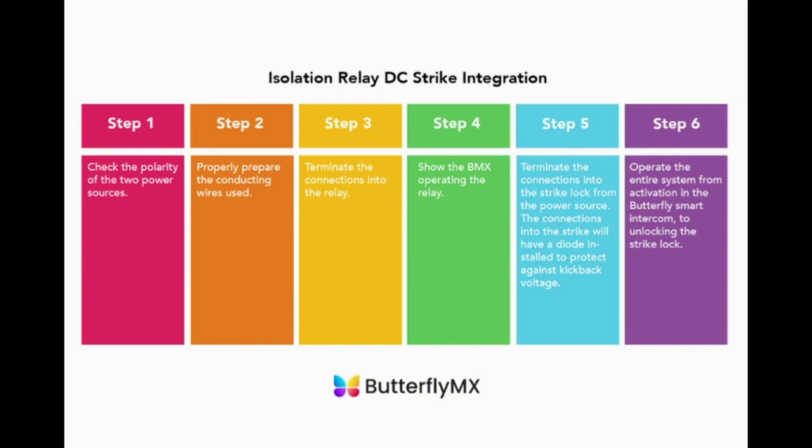These are the steps in the process. First, check the polarity of the two power sources. Second, properly prepare the conducting wires being used. Third, terminate the connections into the ButterflyMX dry termination block from the 12 volt direct current power source and from the ButterflyMX and the power source to the relay.